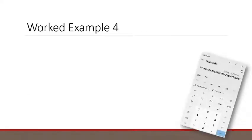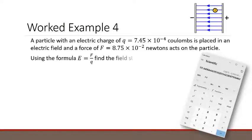For example 4, you will need a calculator. I've got one on the screen there. And we need to apply this to the real world. The diagram there represents two electric plates, one positively charged, the other negatively charged. The blue lines with arrows represent an electric field that goes between those two plates. And then there's a charge, which is positive, that's that yellow circle. Here's the question: A particle with an electric charge of q = 7.45×10⁻⁴ coulombs, and that's the units for measuring charge, is placed in an electric field and a force of F = 8.75×10⁻² newtons, and those are the units of measurement for force, acts on the particle. Using the formula E = F/Q, find the field strength E at that point.